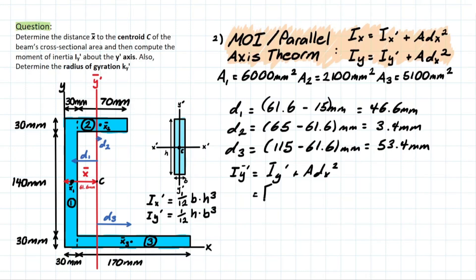So for our first shape, we're going to have one half considering this formula here. Height times base. So the height is going to be 30 plus 140 plus 30, which is 200 mil, multiplied by that base, which is 30. And that's going to be to the power of 3. Then we're adding the area of the shape, which we calculated previously as 6,000. Then multiply that by the distance that we calculated up top. So 46.6 mil, let me erase that, 46.6 squared. And then all of this is going to be in millimeters to the 4.